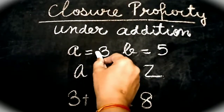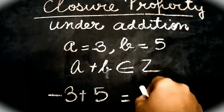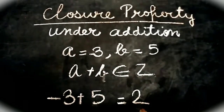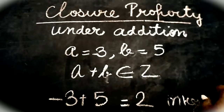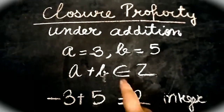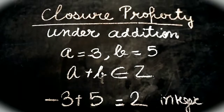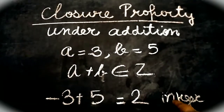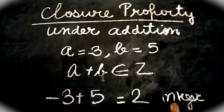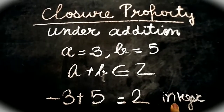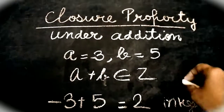You can take any numbers and check — the answer will always be an integer. For example, if I take A as minus 3 and add them, then the answer will be 2, which is again an integer. So closure property under addition means that when I add 2 integers, the sum is always an integer.